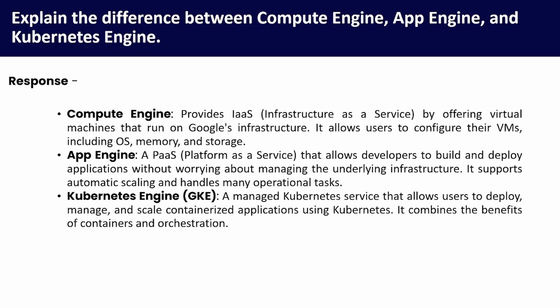The first technical question: explain the difference between Compute Engine, App Engine, and Kubernetes Engine. Compute Engine provides IaaS (Infrastructure as a Service) by offering virtual machines that run on Google infrastructure; it allows users to configure their VMs including OS, memory, and storage. App Engine is a PaaS (Platform as a Service) that allows developers to build and deploy applications without worrying about managing the underlying infrastructure — it supports automatic scaling and handles many operational tasks.